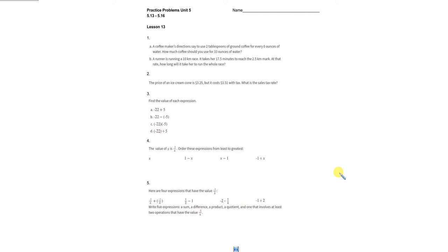Looking at our homework for the week, we have some doozies on here. Let's get started. We're looking at Unit 5, starting on Lesson 13. We have a coffee maker problem where the directions say to use two tablespoons of coffee for every six ounces of water.